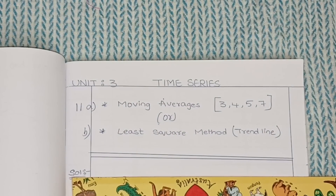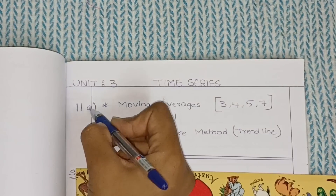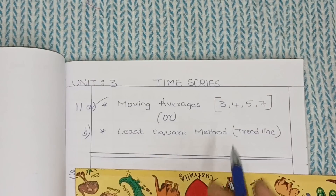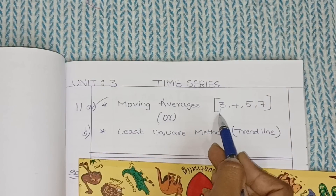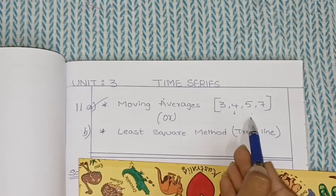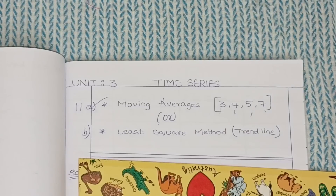My suggestion to you all is better you go with the moving averages method — it's damn easy. In the moving averages method you will be able to calculate three years moving averages, four years moving averages, five years moving averages, and seven years moving averages. These are the types you will have in moving averages.